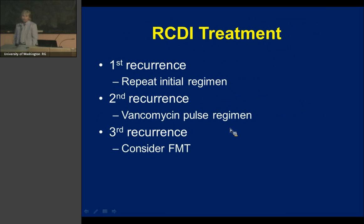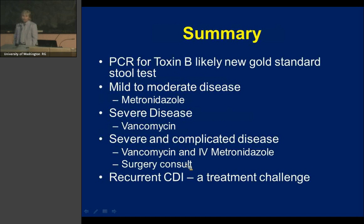In summary: PCR for toxin B is likely the new gold standard for laboratory diagnosis of C. difficile. For mild-to-moderate disease, oral metronidazole remains appropriate — avoid early in pregnancy due to teratogenicity. For severe disease, use vancomycin. For severe and complicated disease, vancomycin plus IV metronidazole, and consider a surgery consult. Recurrent C. diff remains a treatment challenge.